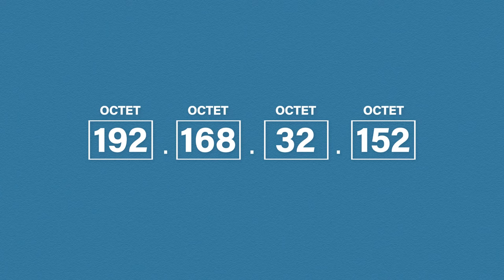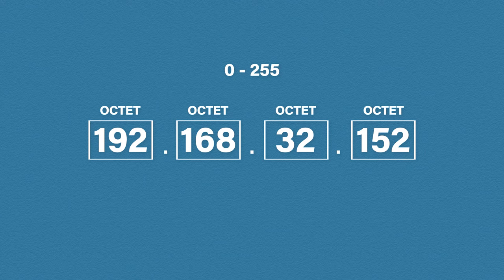These octets are separated by dots or periods. Each octet, in theory, can contain any number between 0 and 255. Why 255? Well, our 32-bit number is separated into four lots of 8, and 255 is the largest number that can be made from 8 bits.